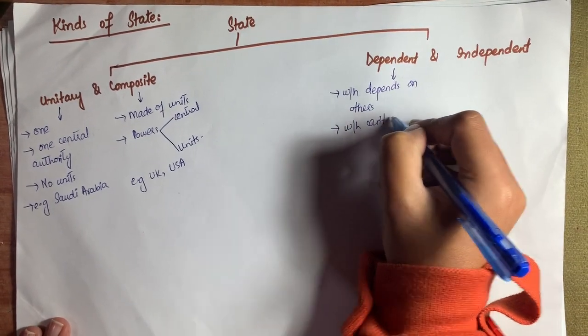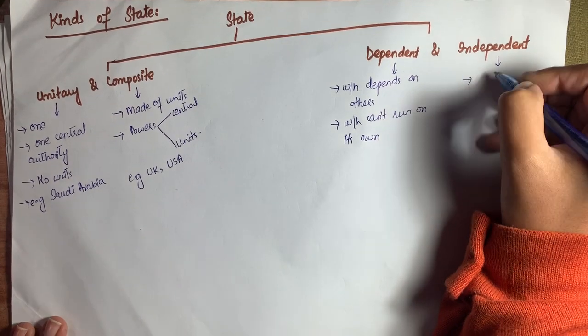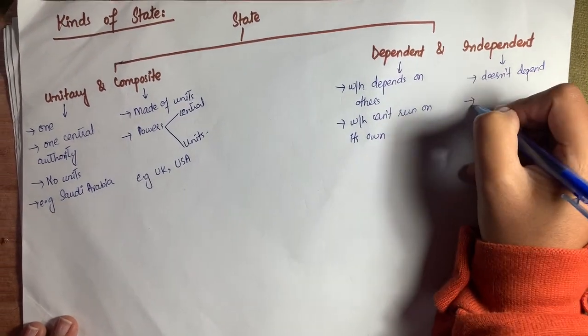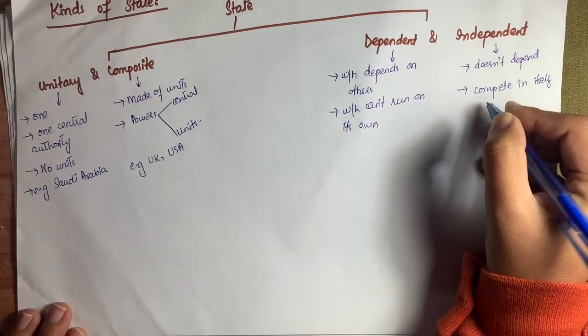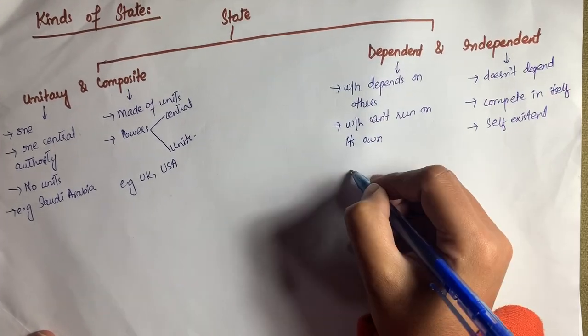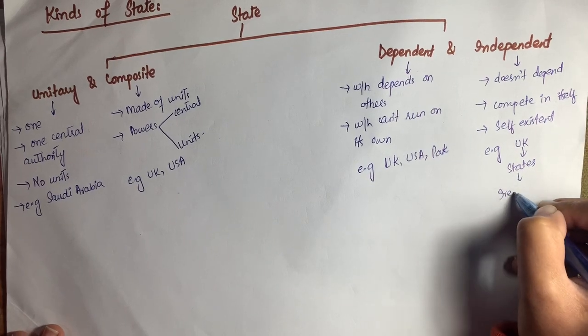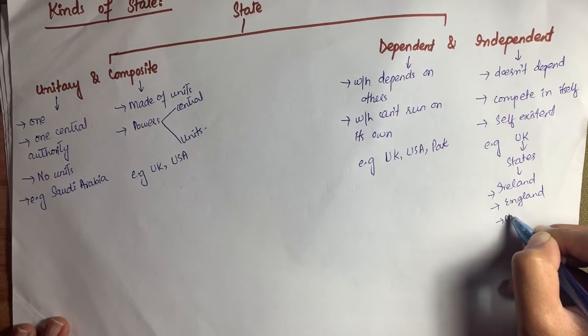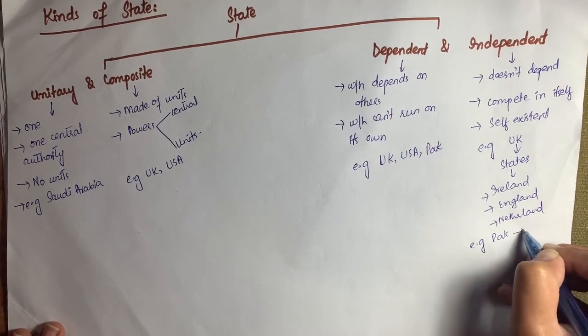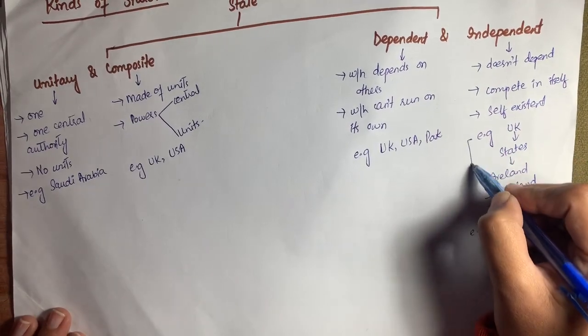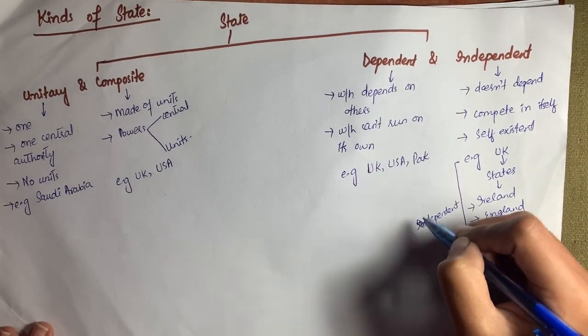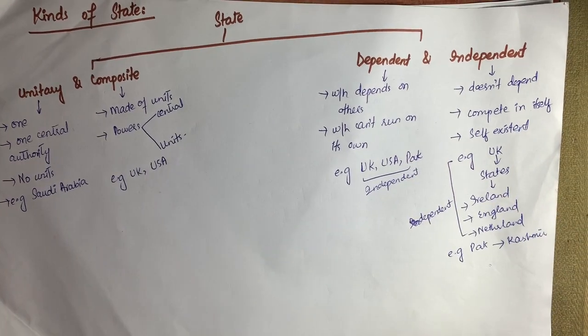Dependent state means a state which cannot sustain itself and depends on another state to run itself. Independent state means a state which possesses separate self-existence and does not depend on anyone. Examples of independent states are the UK, USA, and Pakistan. Examples of dependent states include the constituent states of the UK — Ireland, England, and the Netherlands — which depend on the UK for their existence. Similarly, Kashmir depends upon Pakistan for its existence. That's all about state.